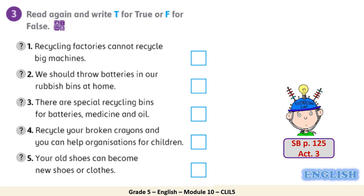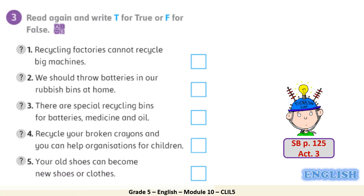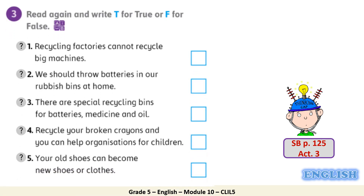Let's check our understanding. Let's have a look at our student book, page 125, activity number 3. In this activity, we'll have to read again and write true or false for the sentences. We'll do number 1 together as an example. Then pause the video, read the text again, answer the questions, and come back to me to check your answers. Let's begin. Number 1: Recycling factories cannot recycle big machines. Is that true? No. It is false because we are encouraging people to send their old refrigerators and other big machines to the recycling factories. Excellent answer.